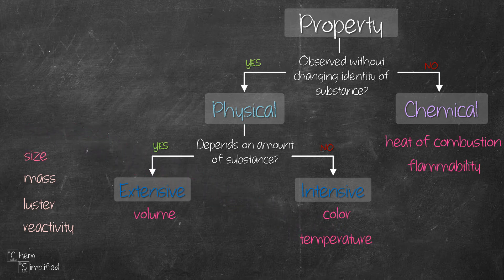Size is something that can be measured without changing the chemical nature of the substance, making it a physical property. If we have a lot of that substance, the size is large; if we have very little of it, the size is small. Since it's dependent on the amount of substance, we say size is an extensive property.